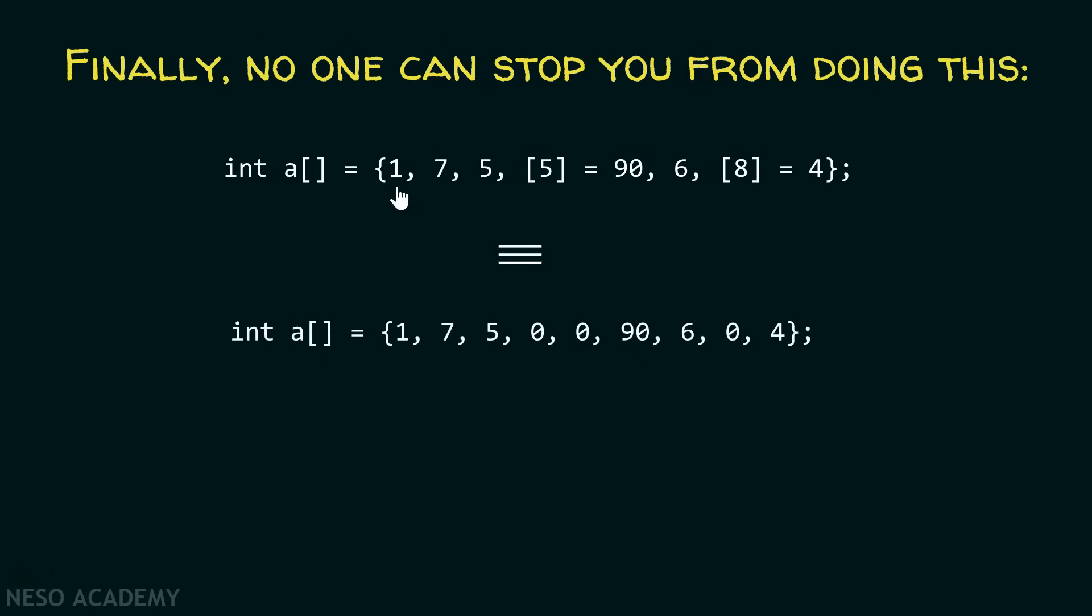Obviously, at position 0, 1 will be placed. At position 1, 7 will be placed. At position 2, 5 will be placed. And at position 3 and 4, automatically 0's will get placed.